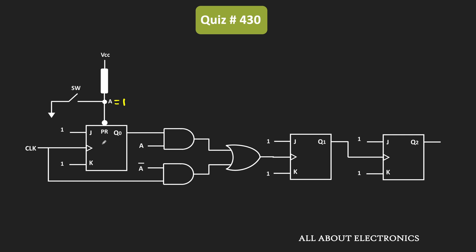So in this condition, at every clock pulse, this output of this JK flip-flop will toggle. So this output is equal to Q0, and that is the LSB of the counter. Since A is equal to 1, the output of this first AND gate will become Q0. And since A is equal to 1, this A' will become 0, meaning the output of this second AND gate will be equal to 0. So if we see the output of the OR gate, then that is equal to Q0 plus 0, which is equal to Q0.